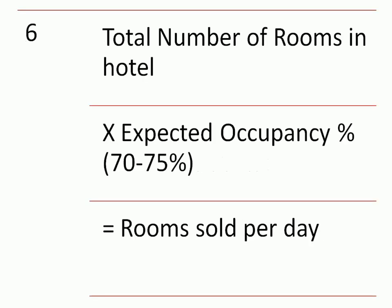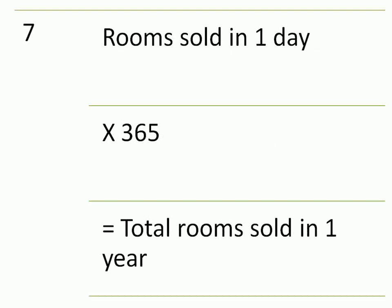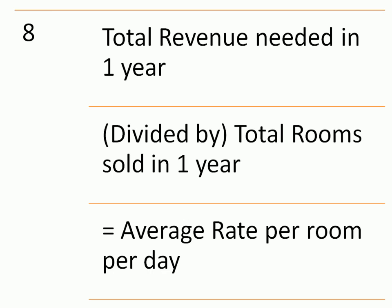Total number of rooms in hotel multiplied by expected occupancy percentage, approximately 70–75%, equals rooms sold per day. Rooms sold in one day multiplied by 365 equals total number of rooms sold in one year. Total revenue required in one year divided by total rooms expected to be sold in one year equals average rate or tariff per room per day.